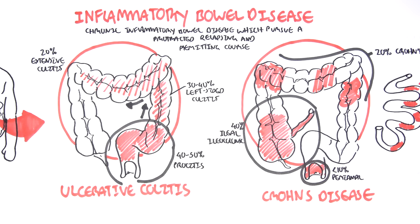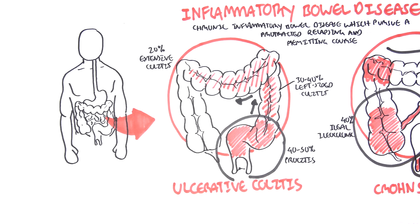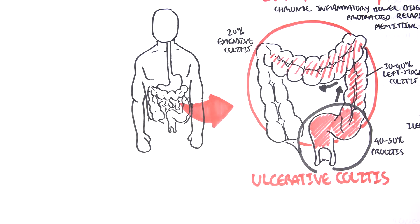We saw the common areas affected in ulcerative colitis and Crohn's disease, and noted that ulcerative colitis spreads distal to proximal, while Crohn's disease has skip lesions and mainly affects the ileocecal area. There are many more differences which we will go over. But first, let us look at the signs and symptoms associated with inflammatory bowel disease.